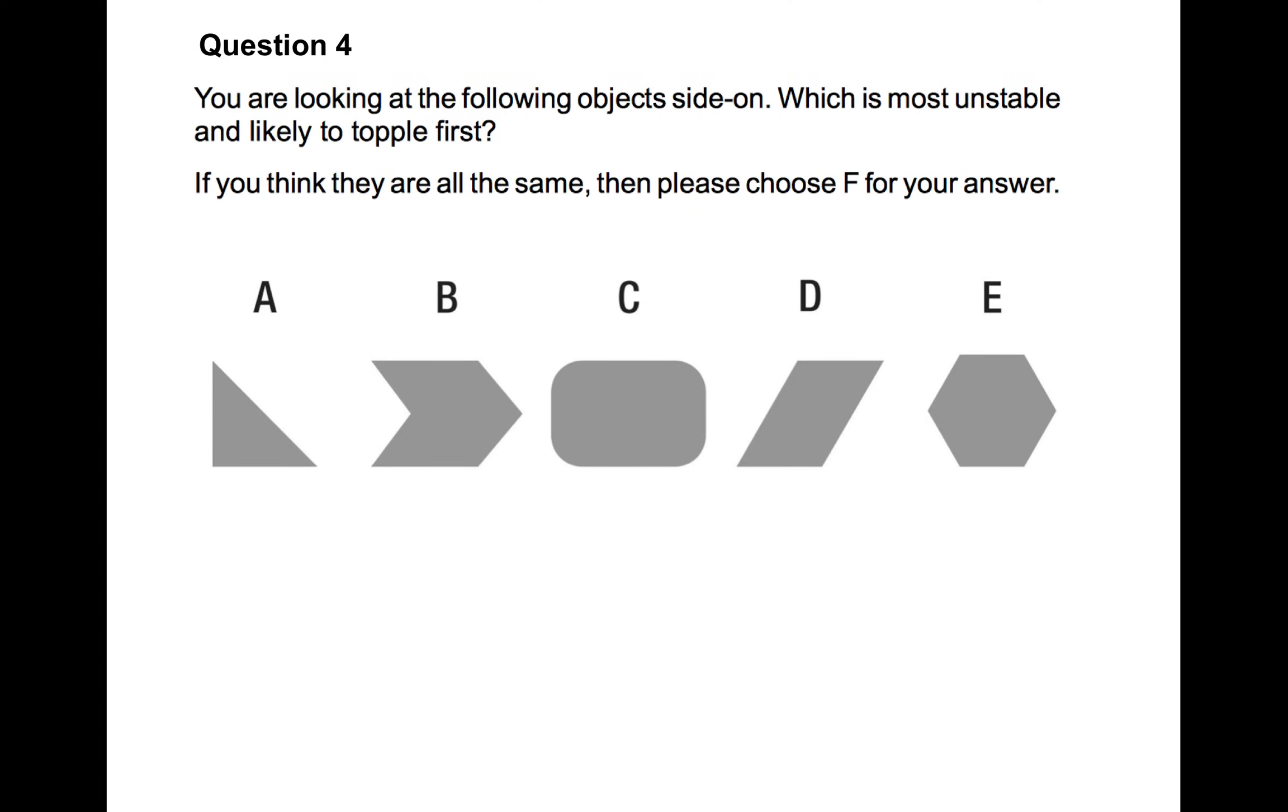Question number four. Now, you are looking at the following object side on. So read the question. You're not looking from top down. You're looking side on exactly as we've seen them here on the screen. Which is most unstable and likely to topple first? So if you think they're all the same, then please choose F for your answer. So which is most unstable? And obviously, the answer there is D. That's the one that's most likely to topple first, if we're looking at them side on. The question might say, you're looking at the following object side on, which is the second most unstable? So read the question. Or it might say, which is the most stable? And in which case, the most stable, I would suggest, is number C. The second most unstable would be, in my opinion, B, and then E, then A, and then C.